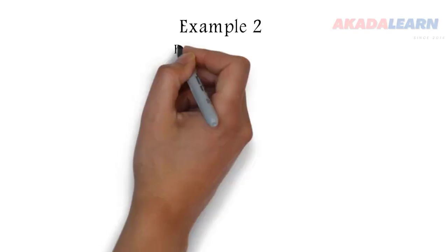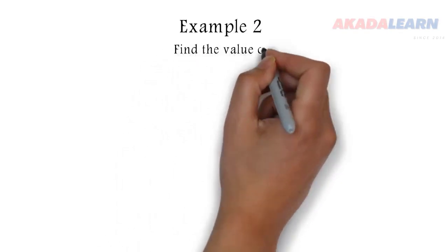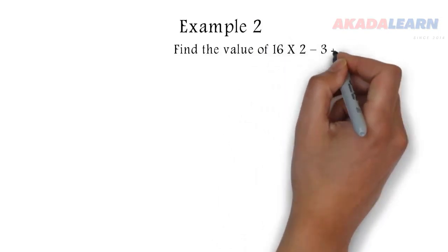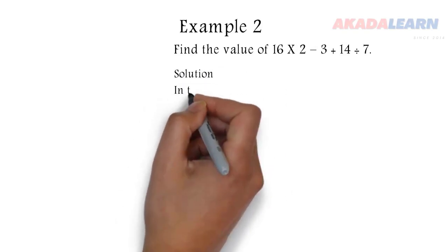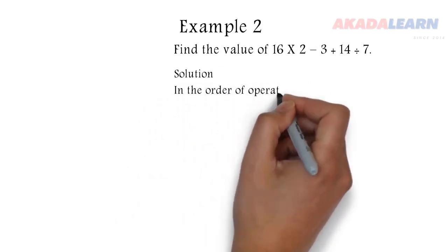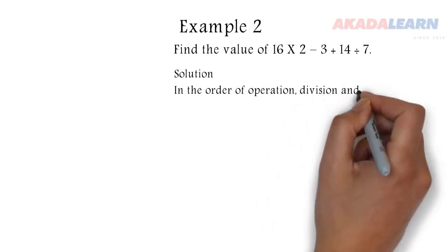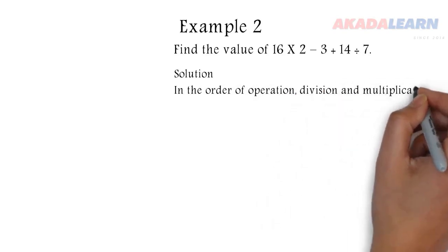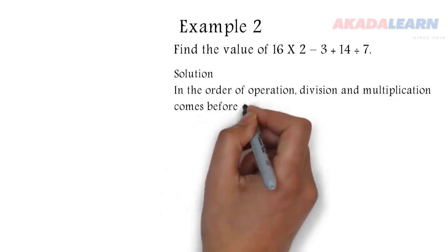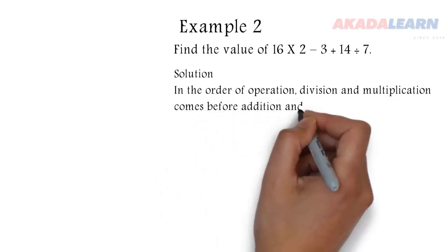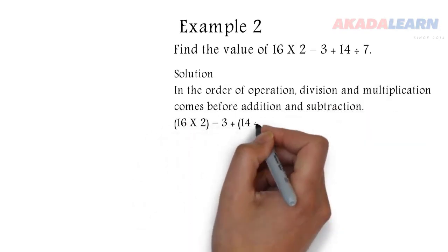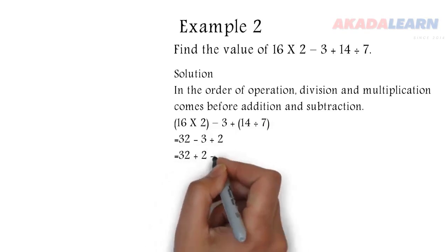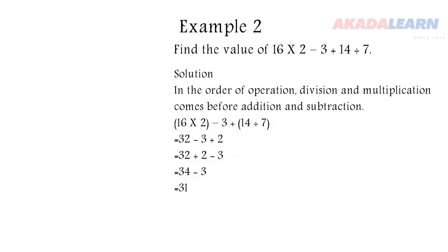Let's see another example to help us remember our application of BODMAS. Find the value of 16 times 2 minus 3 plus 14 divided by 7. Now from BODMAS, we discover that multiplication and division have to be carried out before addition and subtraction. So first we multiply and divide: 16 times 2 is 32, and 14 divided by 7 is 2. Then we add and subtract last, and we get 31.